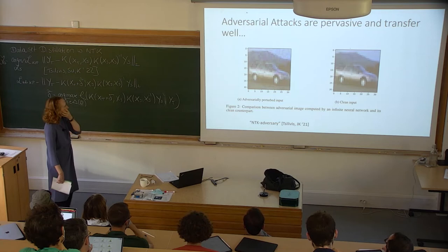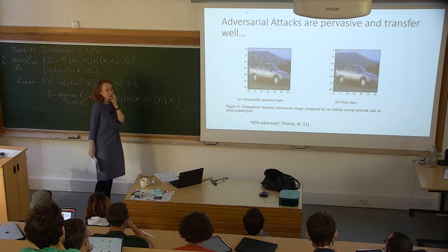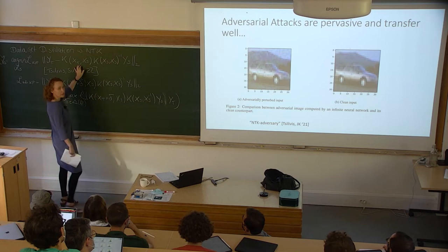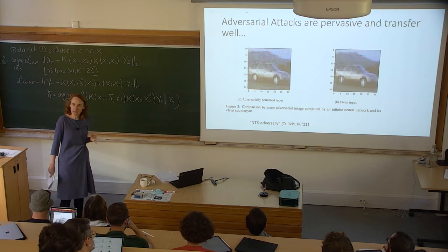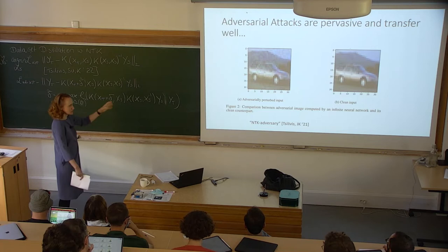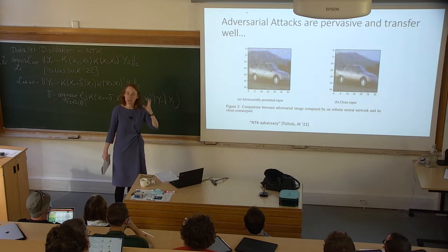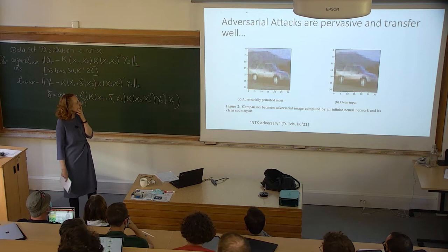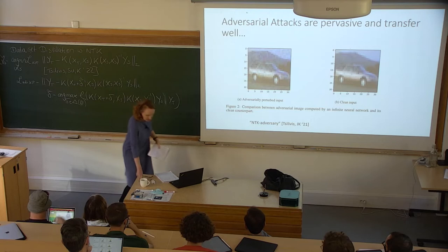These adversarial examples tend to be quite transferable: you produce them with one model and they tend to also fool completely different models. They are universal. When Nikos and I started working on this, we asked what can the NTK tell us about adversarial examples. We produced the kernel of a two-layer network, made adversarial examples with it, and they managed to fool normal finite-width neural nets — a cute example showing NTK-produced adversarial examples transfer.